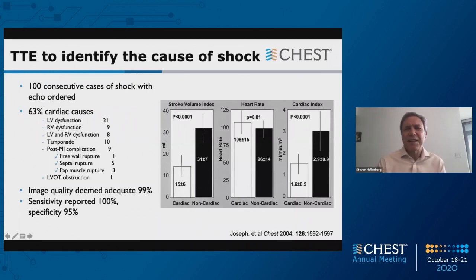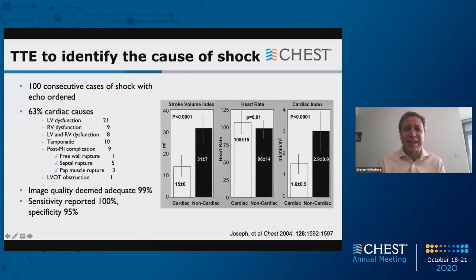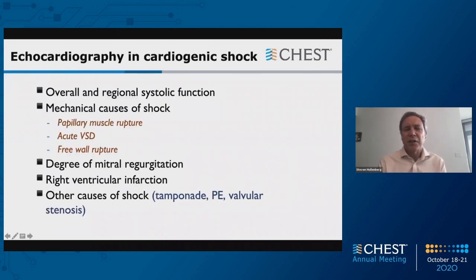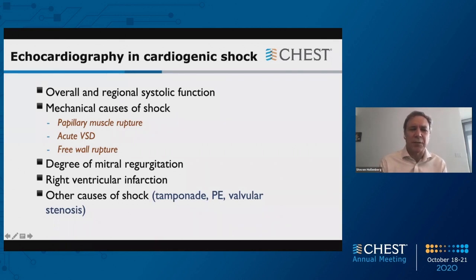Here's a study showing that TTE can identify the causes of shock. From 2004, they looked at 100 consecutive cases of shock and found 63% had cardiac causes. The study reported image quality adequate in 99%, sensitivity of 100% — a little hard to believe, but it makes the point that transthoracic echocardiography is useful in shock. In cardiogenic shock specifically, you want overall function and regional systolic function, evidence of wall motion abnormalities, and signs of previous infarction with fibrosis and thinning. Echocardiography is probably the best and most expeditious way to diagnose mechanical causes of shock: papillary muscle rupture, acute VSD, or free wall rupture. You can also assess mitral regurgitation severity, right ventricular infarction via a dilated right ventricle, and other causes of shock — tamponade, pulmonary embolism, or valvular stenosis.